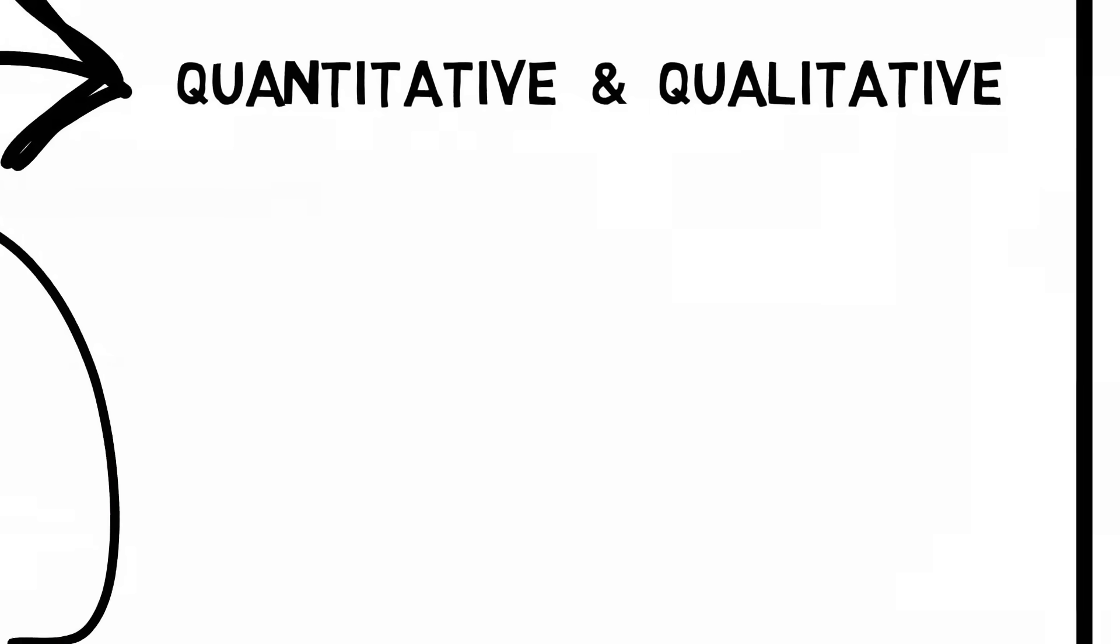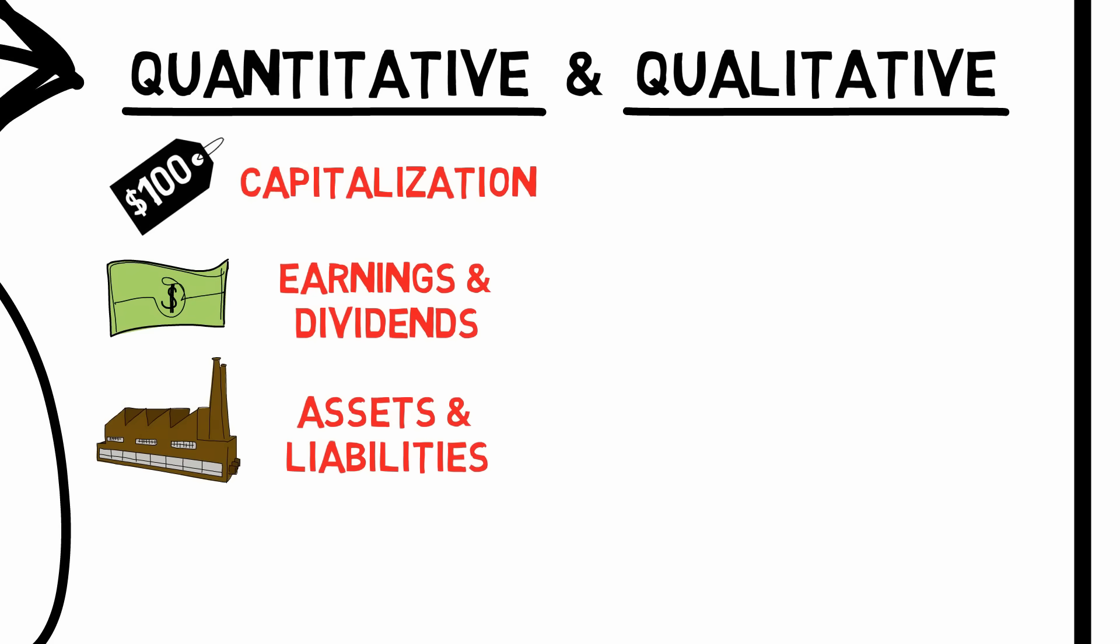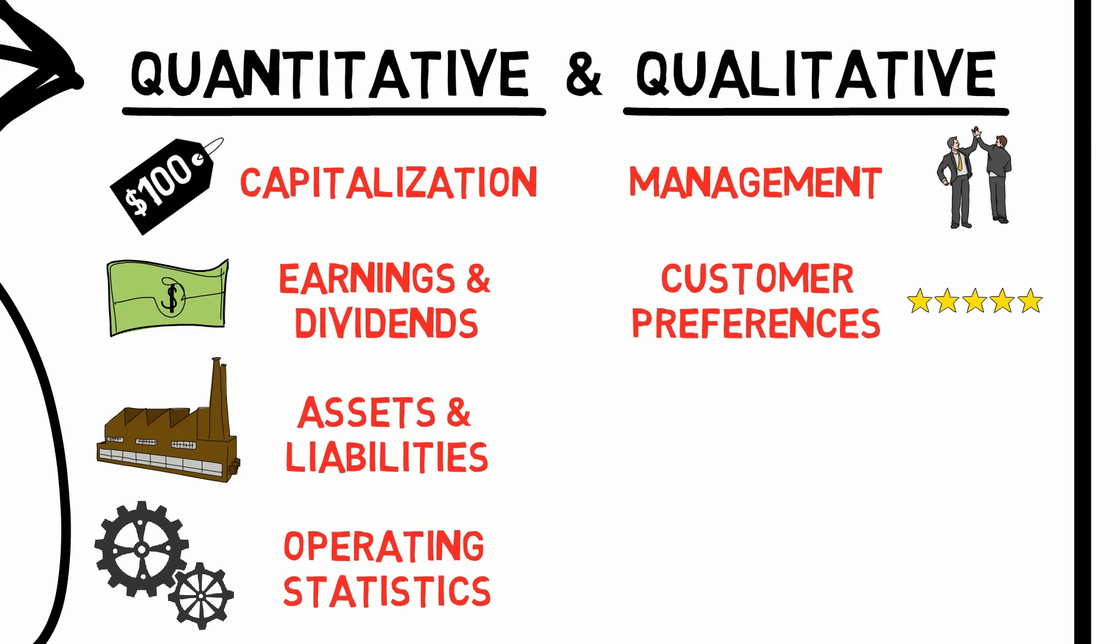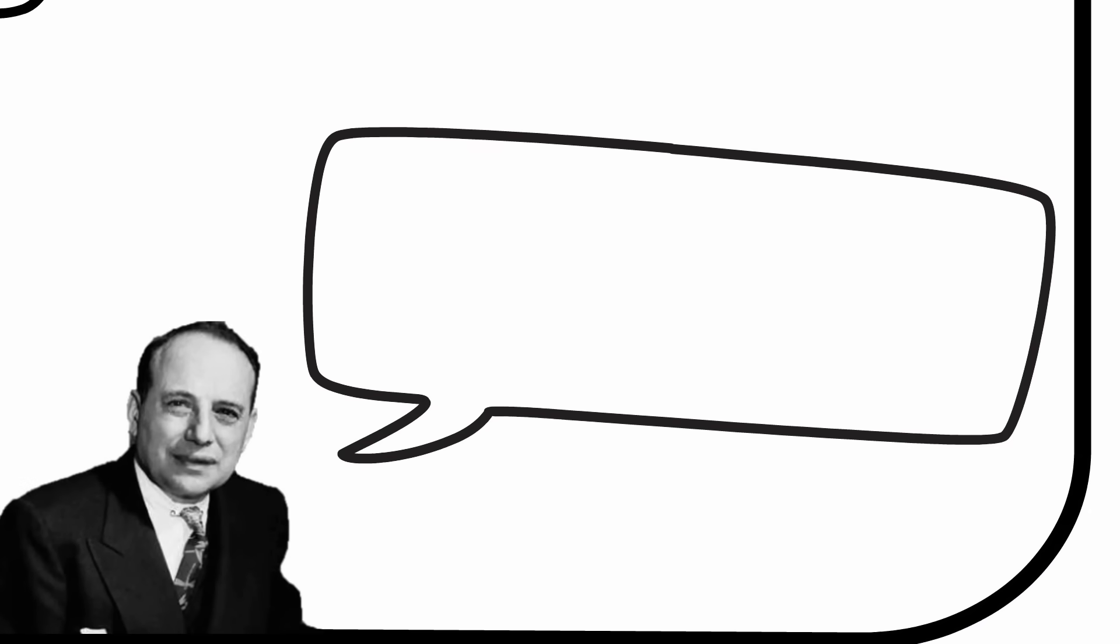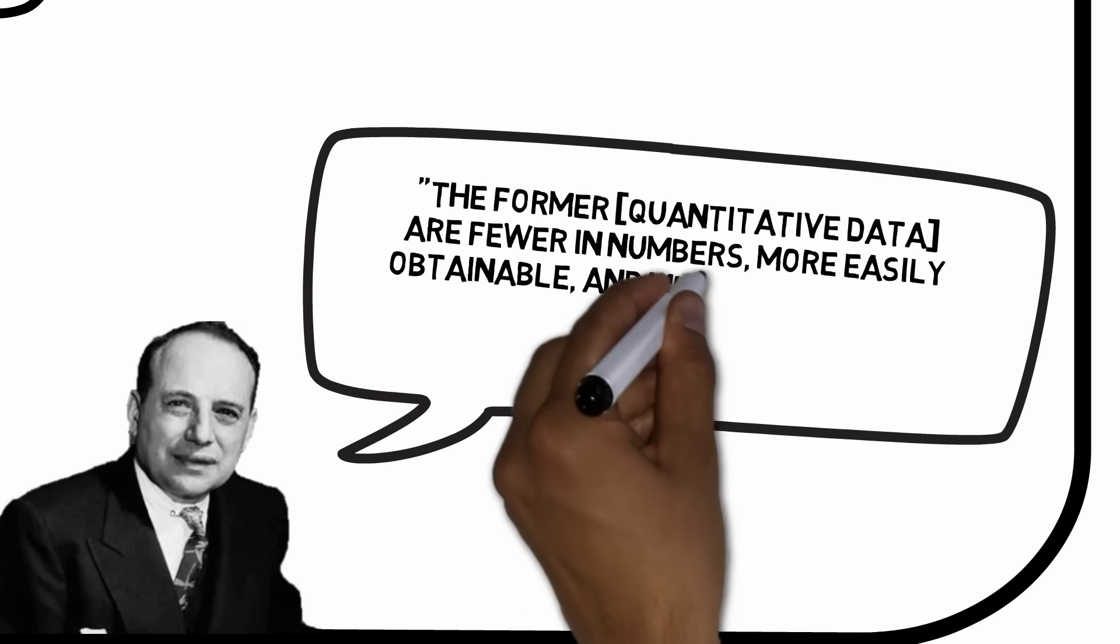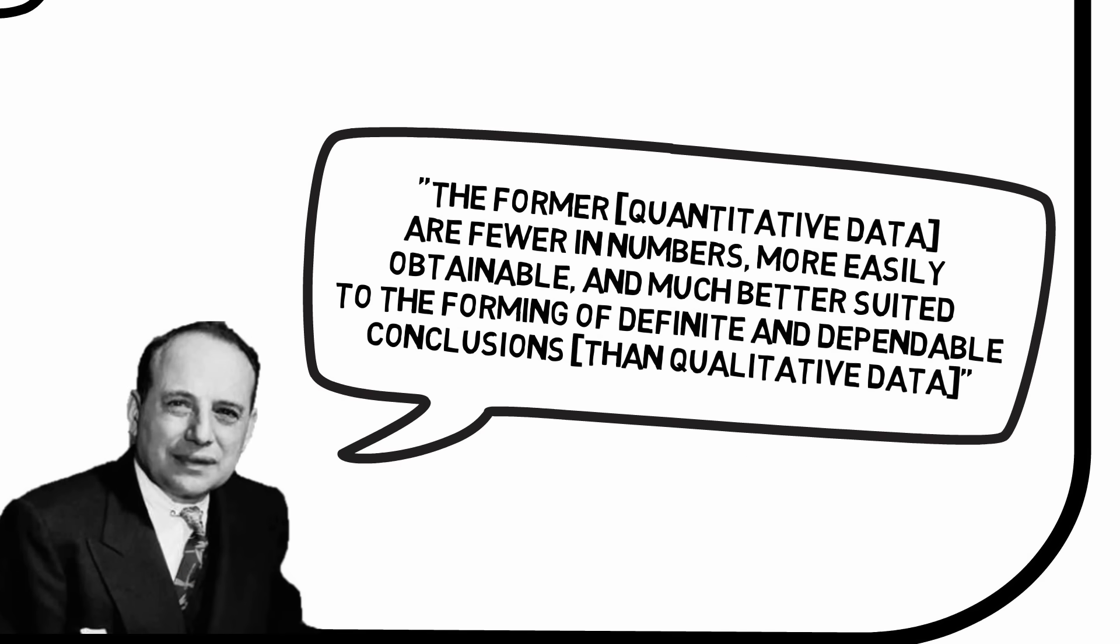Information is of two types: quantitative and qualitative. Quantitative data may be divided into capitalization, earnings and dividends, assets and liabilities, and operating statistics. And qualitative information are things such as quality of management, customer preferences and trends, competitive landscape, and technological change. This book is heavily tilted towards the quantitative data. After all, it's called value investing, and Benjamin Graham states that the former are fewer in numbers, more easily obtainable, and much better suited to the forming of definite and dependable conclusions.